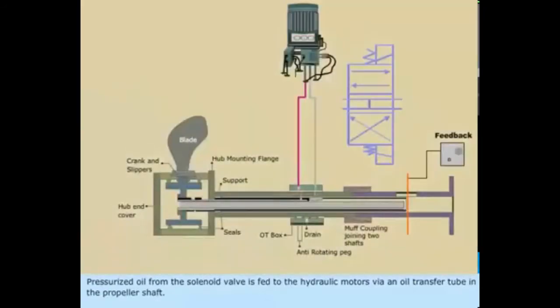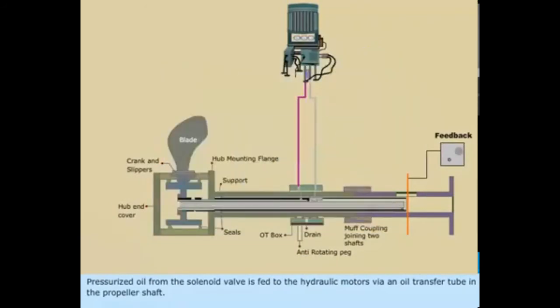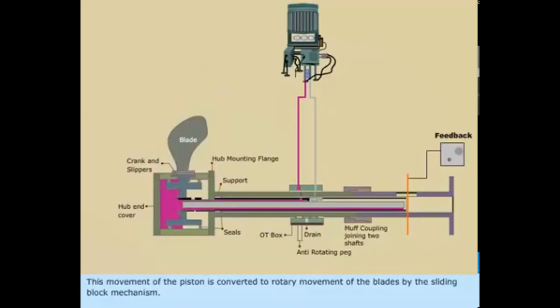Pressurized oil from the solenoid valve is fed to the hydraulic motors via an oil transfer tube in the propeller shaft. This movement of the piston is converted to rotary movement of the blades by the sliding block mechanism.